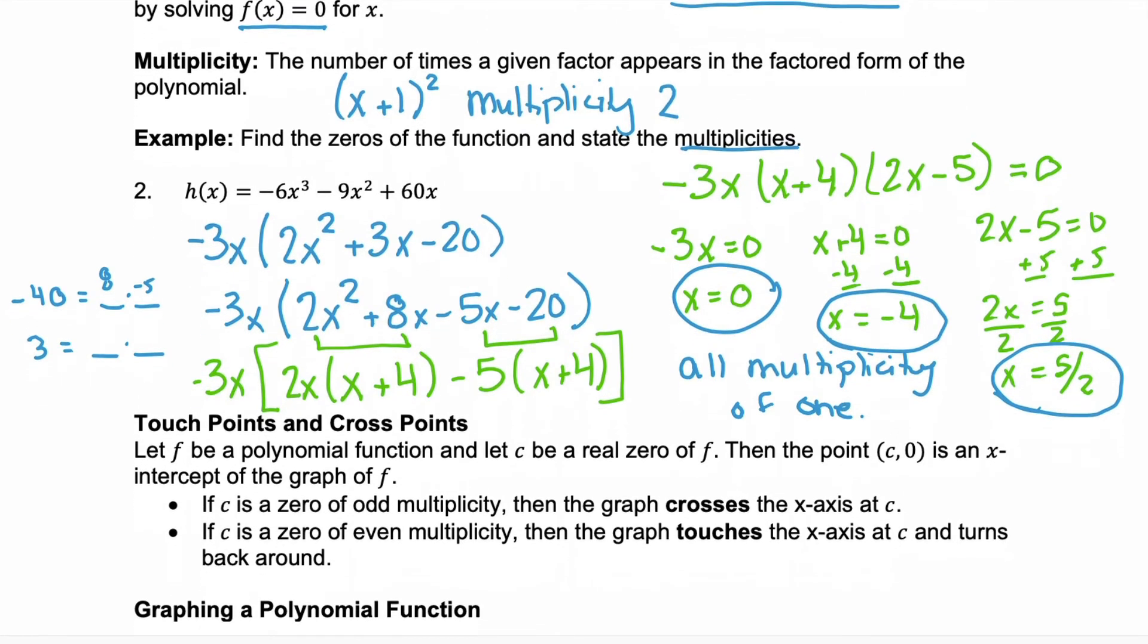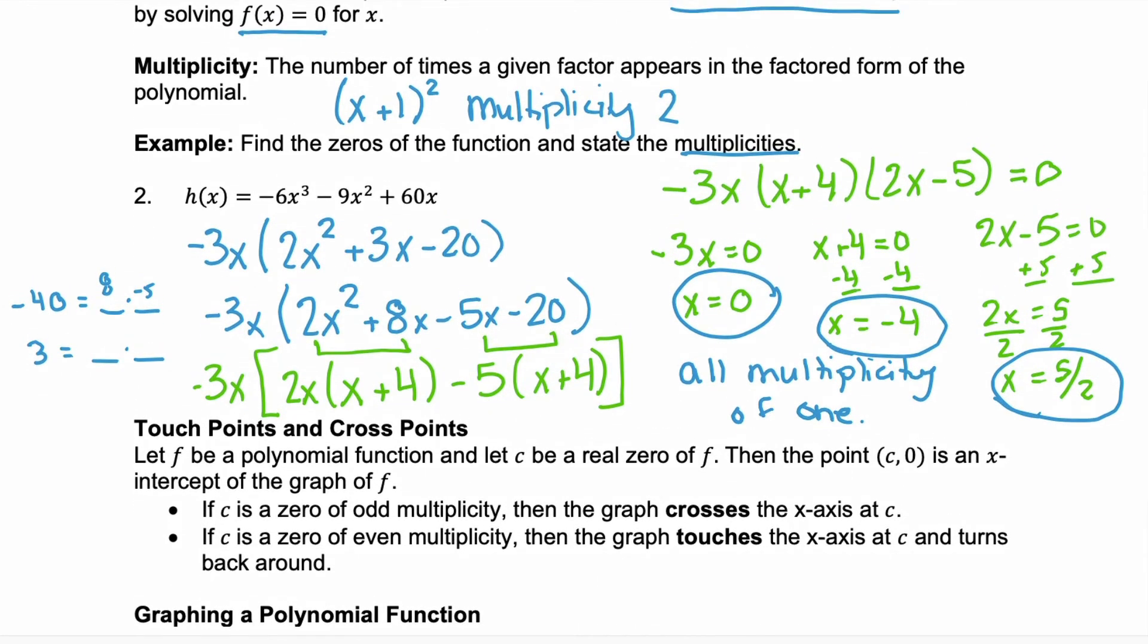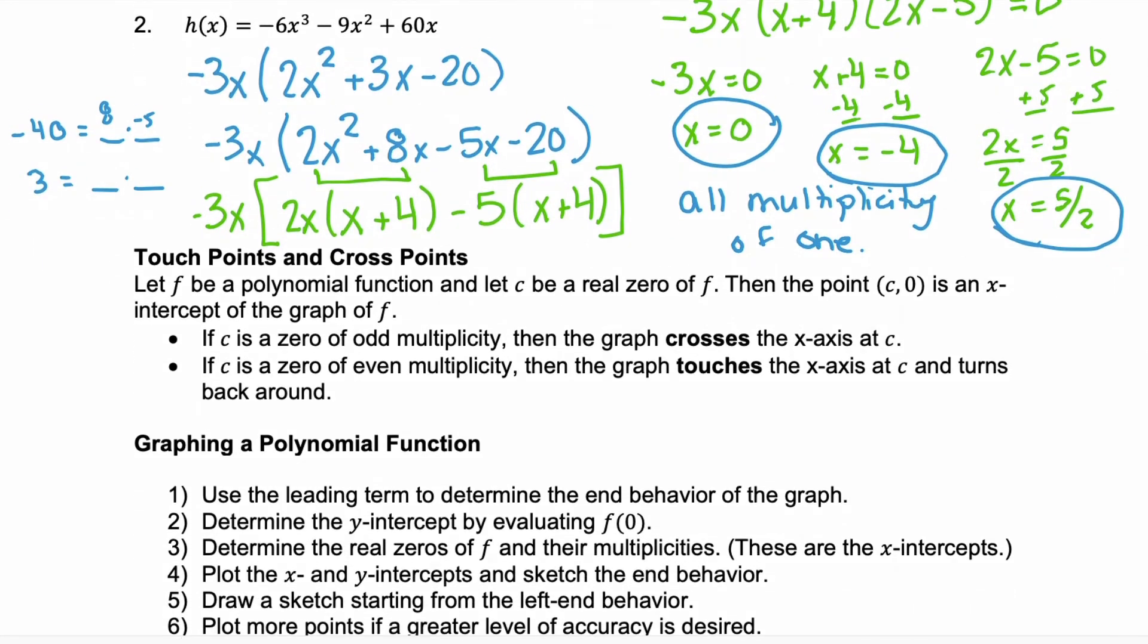So, why do we care about zeros? And why do we care about the multiplicity of a zero? Well, remember, the zeros are the x-intercepts for our polynomial. The multiplicity tells us what happens at that point. So, we can have what's called a touchpoint or a crosspoint. If the zero is an odd multiplicity, like these that we just found that are multiplicity of 1, these are crosspoints. Which means, if this is our x-axis, when our graph comes down or up to this x-intercept, it's going to cross. That's what a crosspoint is.